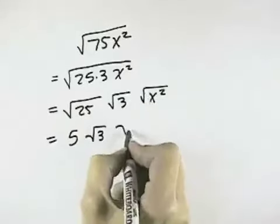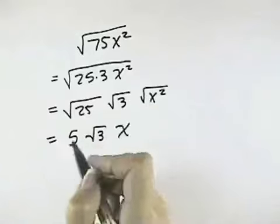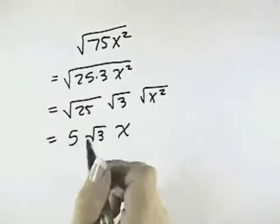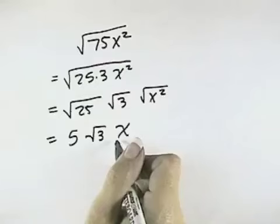and square root of x squared is x. And so I can reduce this or simplify it to 5 times the square root of 3 times x.